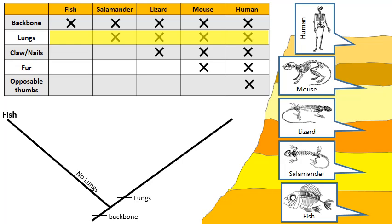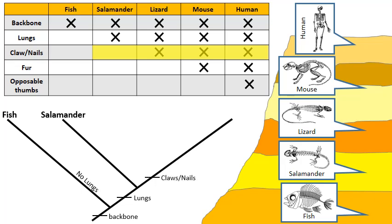Fish don't have lungs — they breathe with the assistance of gills. Now that the fish has been separated, of the four animals left — the salamander, the lizard, the mouse, and the human — how is one different from the others? Salamanders don't have claws or nails, so I'm going to branch off next with my salamander. The lizard, the mouse, and the human have claws or nails; salamanders are on a separate branch.